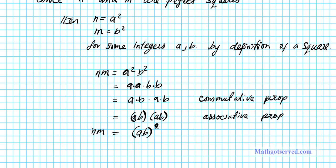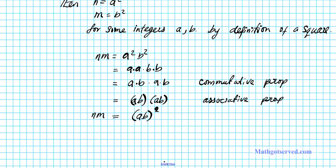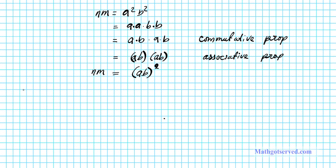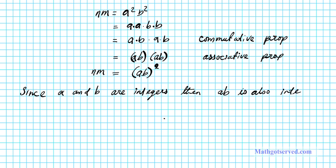Now, what do we know about ab? Since a and b are integers, the product is going to be an integer also by closure. Since a and b are integers, then ab is also an integer because integers are closed under multiplication — when you multiply integers, you get an integer. So let s equal ab for some integer s.